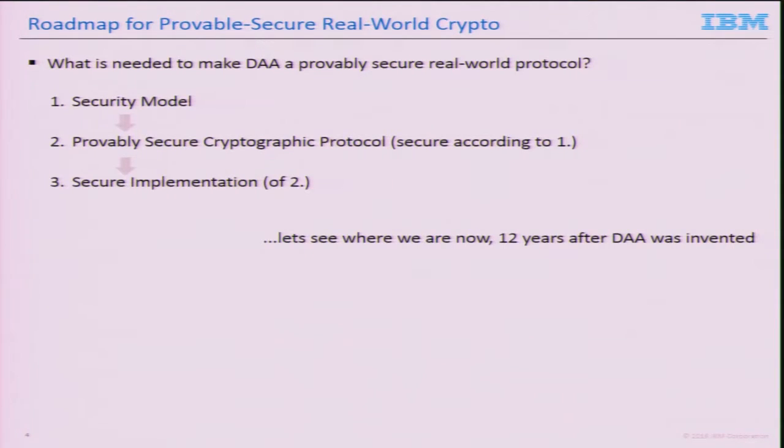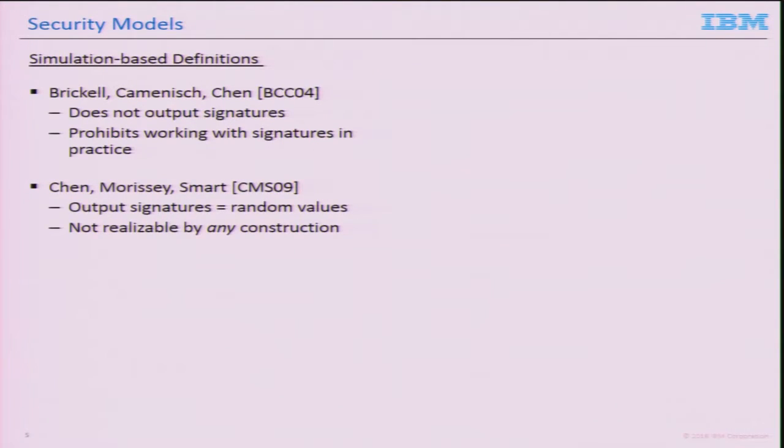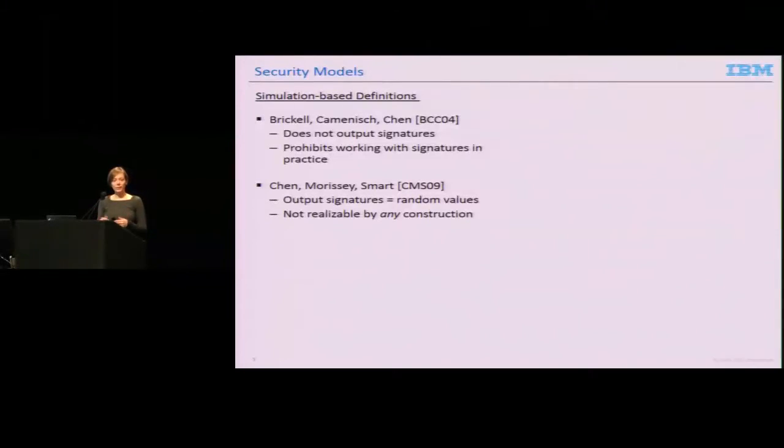Let's see where we are in this roadmap 12 years after DAA was invented. It had a pretty good start because it was developed by cryptographers from the beginning. They made a protocol with a formal security model and proved the scheme secure. However, the formal model was not complete enough. It was missing some features and functionality. In particular, it was missing the capability to output signatures to the verifier, which might sound weird, but verification was modeled as an interactive process. In practice, you're not allowed to work with signatures, store them, or re-verify them, because then you step outside the security model and the provable security guarantees wouldn't hold anymore.